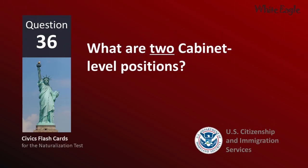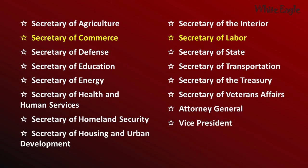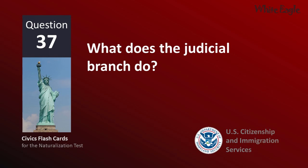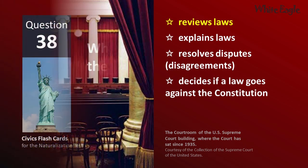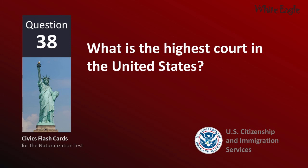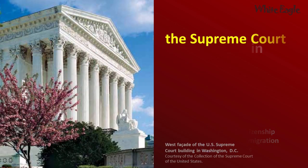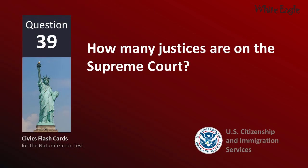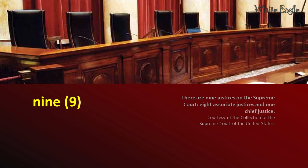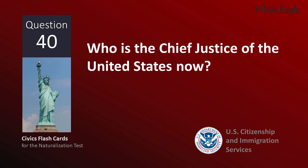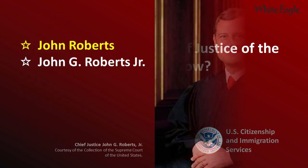What are two Cabinet-level positions? Secretary of Commerce, Secretary of Labor. What does the Judicial Branch do? Review laws. What is the highest court in the United States? The Supreme Court. How many justices are on the Supreme Court? Nine. Who is the Chief Justice of the United States now? John Roberts.